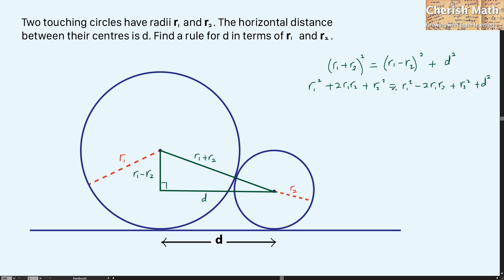Now I need to simplify this equation. What's left here is 4R1R2 equal D squared. The value of D in terms of R1 and R2 is 2 multiplied by the square root of R1 times R2. And we solve the puzzle.